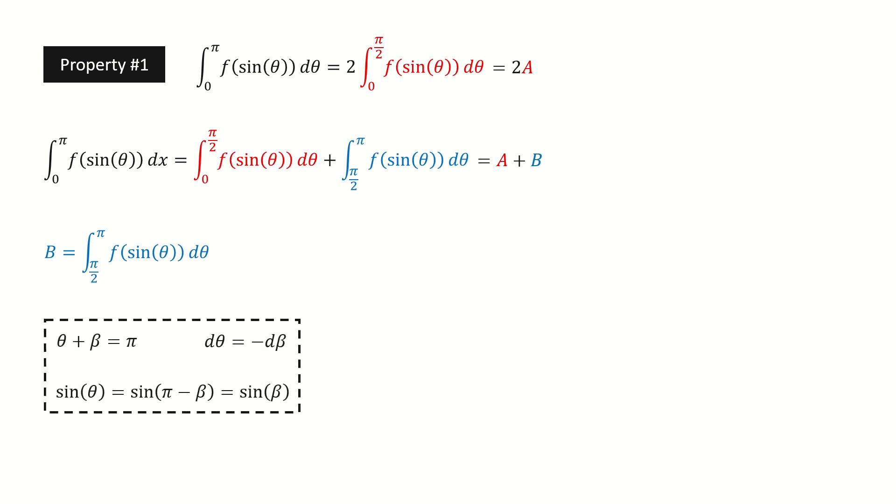I copy the integral B here. And then we make a substitution. We let theta plus beta equals pi. So d theta equals minus d beta. And from the symmetry of the sine function, we got sine theta equals sine beta. After plugging in the substitution, we got here. And we use this minus sign to flip the lower and upper limit. So we got here. And if we compare this integral with this red color integral, they are exactly the same. So it equals capital A, and we are done for property number 1.